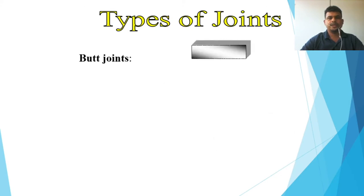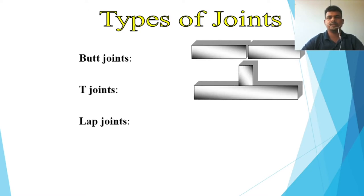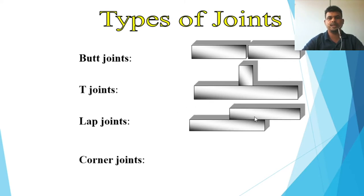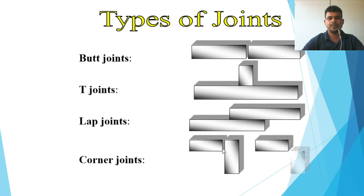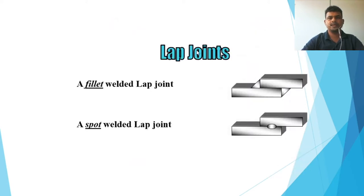Types of joint include the butt joint, T-joint, lap joint — where two metals are lapped and welded — and corner joint, which can be either a closed corner or open corner. The lap joint can also be configured as a fillet weld lap joint or a spot weld lap joint.